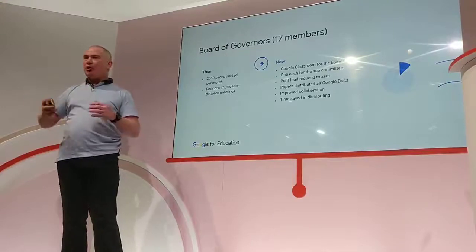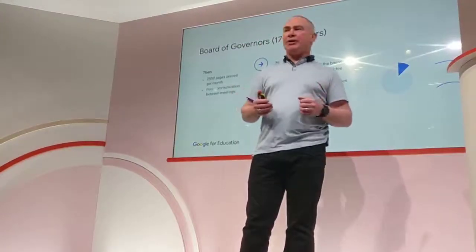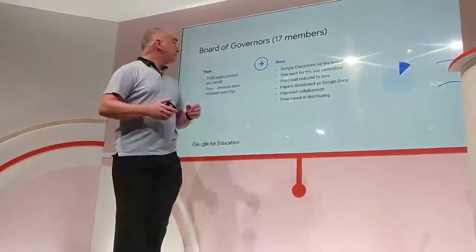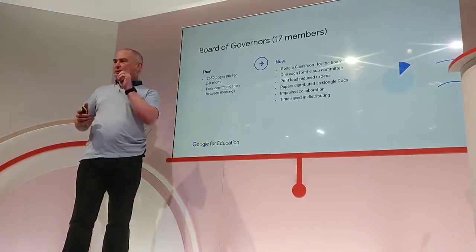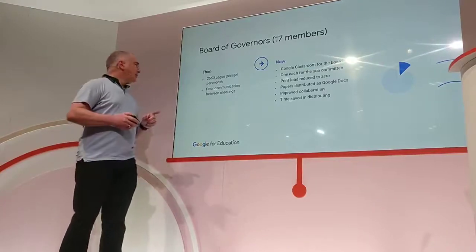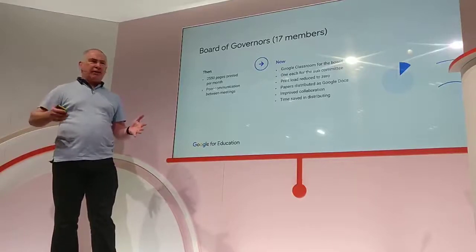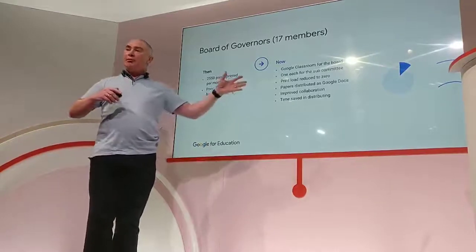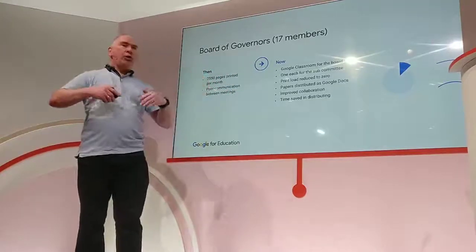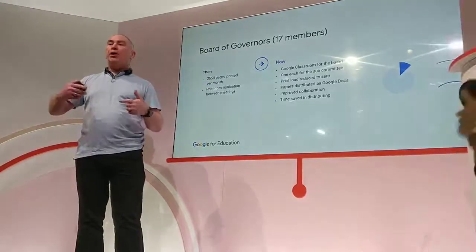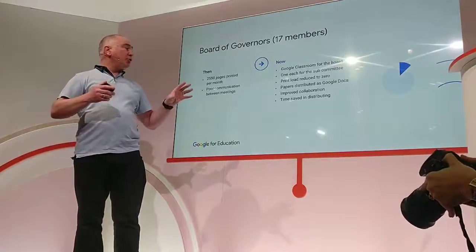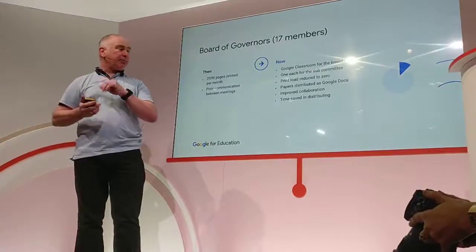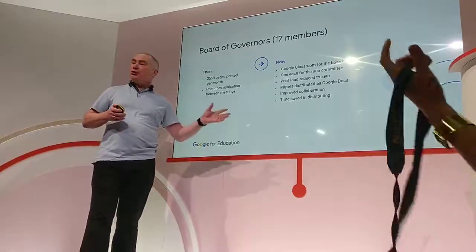It's also being driven by our Board of Governors, who want to see cost reductions. We used to print 2,550 pages for the governing body — per meeting, every month. We created a Google Classroom for the Board, one for each of the sub-committees. We shared everything into the classroom in Docs, Sheets, and Slides. That means the Board now gets papers distributed much quicker, there's no confusion about putting different things together, we've improved collaboration with the Board, and we've cut the time spent on distribution.